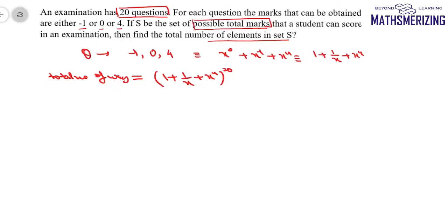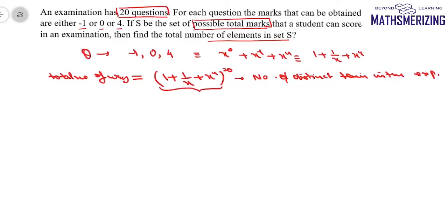To find all possible total marks, we need to find the number of distinct terms in this expansion. We cannot use the formula n+r−1 C r−1 because it is applicable only when the variables are unrelated or distinct.